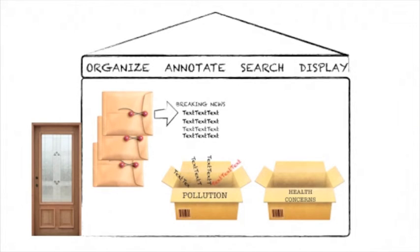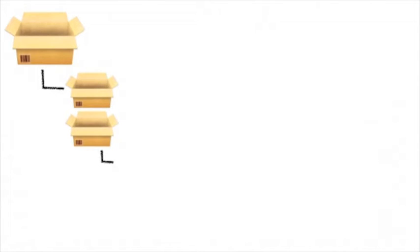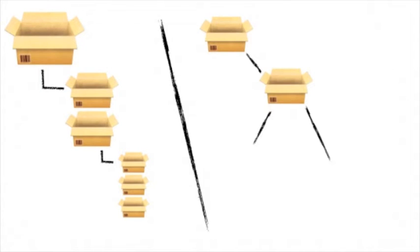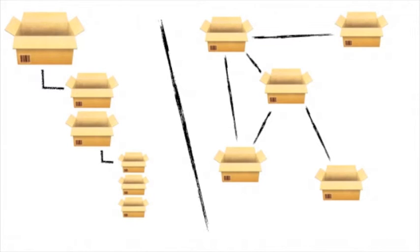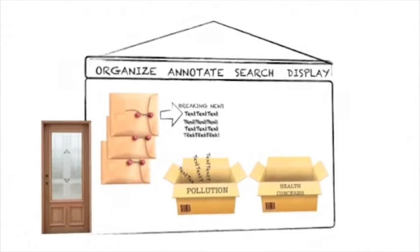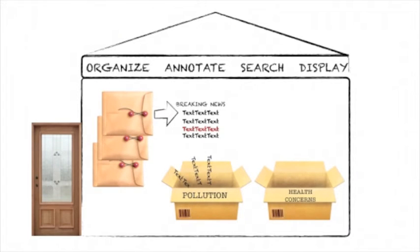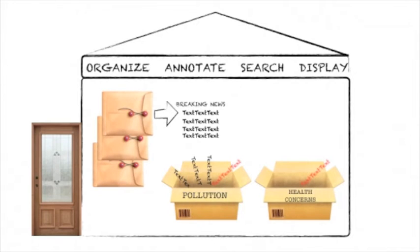Your coding boxes are typically ordered hierarchically, meaning that codes can also contain subcodes. Some programs also organize codes in families — in this case, one code can be a member of many families, letting you create a network of codes. The great thing about QDA software is that those snippets are not really cut out of your texts; they're assigned to the box, but your newspaper article still stays intact. Also, one piece of data can be assigned to several boxes — for example, the same piece can be assigned to both pollution and health concerns — helping you find them later.